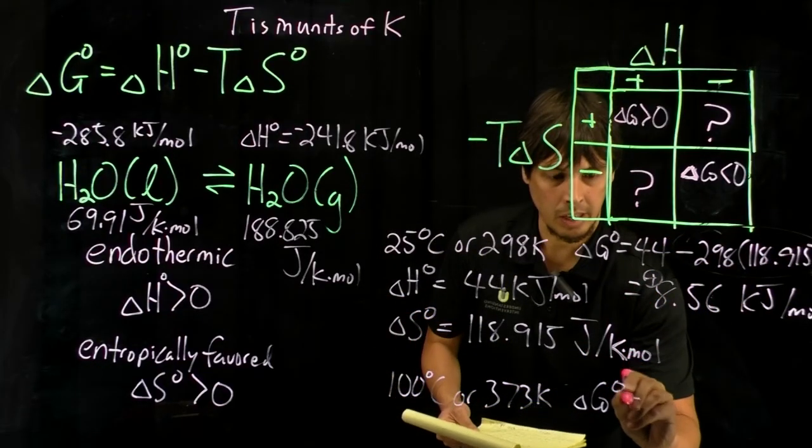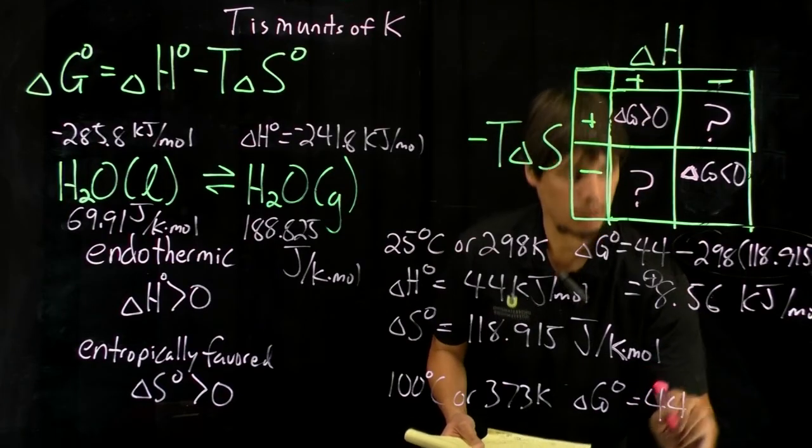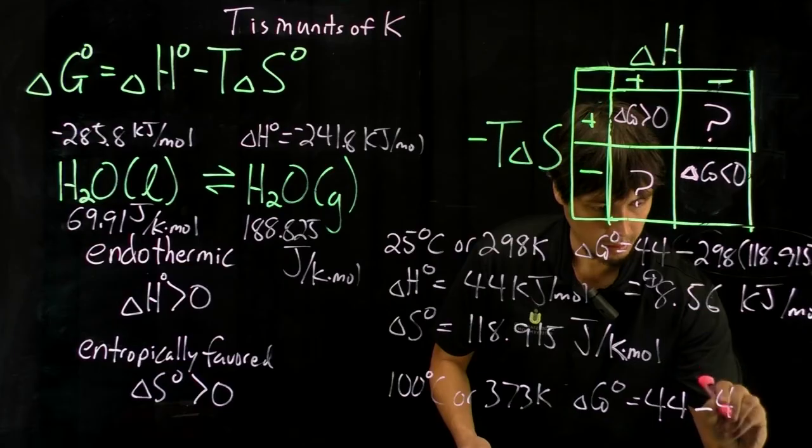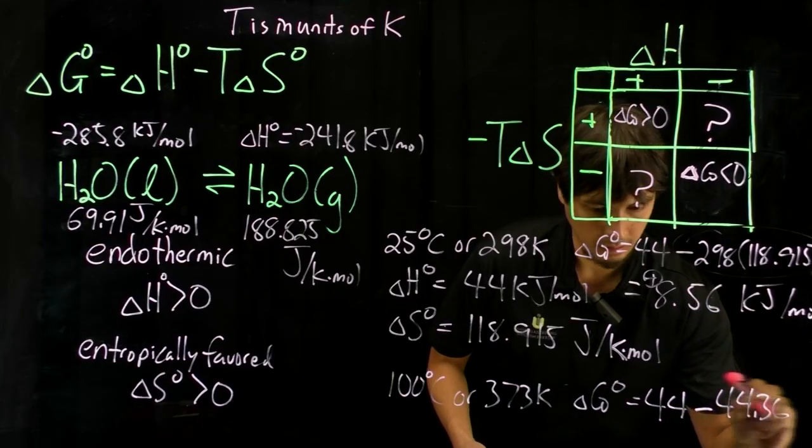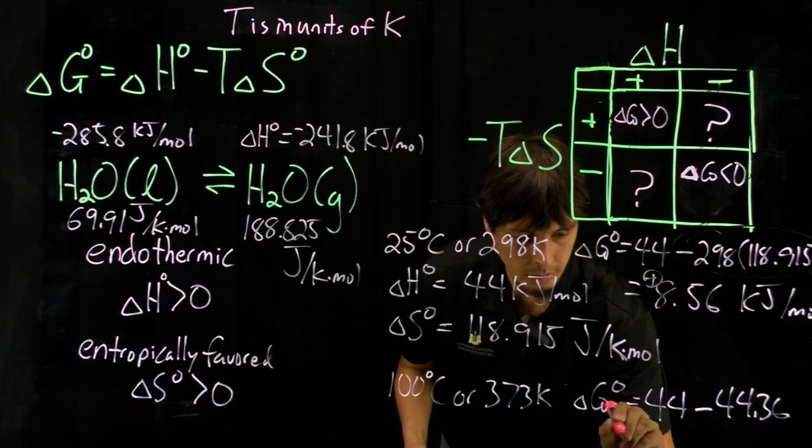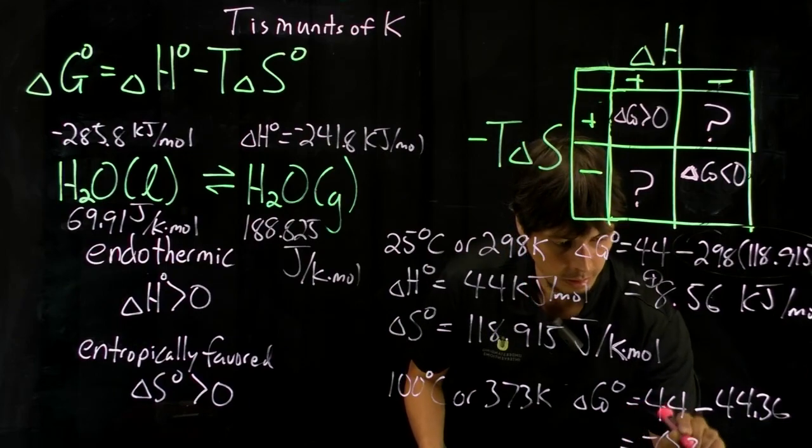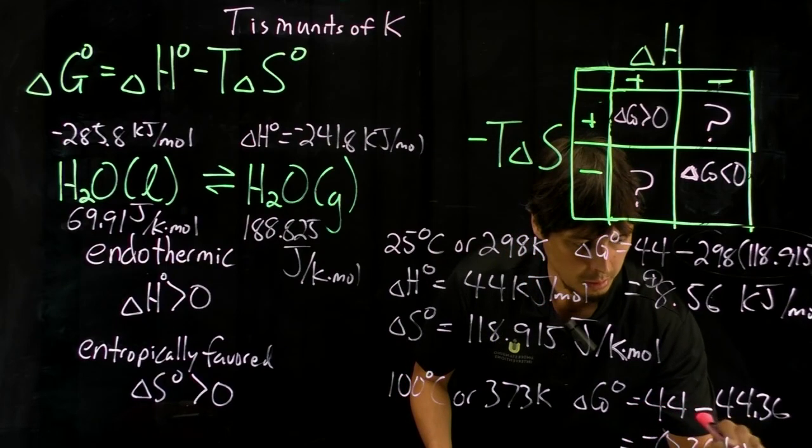And what we get in this case is 44 minus 44.36, which is equal to negative 0.36 kilojoules per mole.